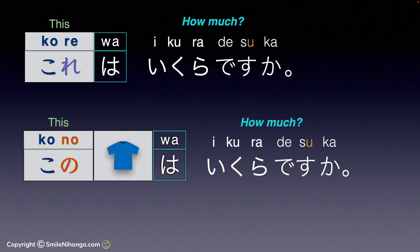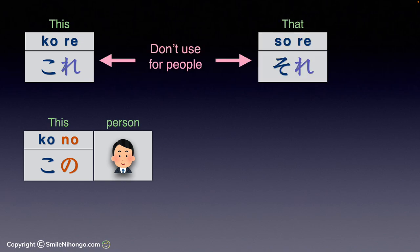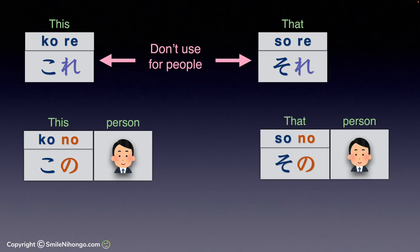How you refer to an object is a personal choice, but what you have to be careful with is when you use コソア to refer to a person. This is a very important aspect of Japanese culture, so please take notes. You cannot use これ or それ to refer to a person unless you don't mind sounding completely impolite or disrespectful. Instead, you have to use この人 — 'this person' — or その人 — 'that person.'